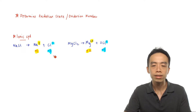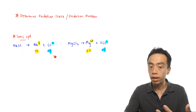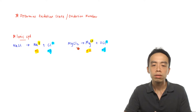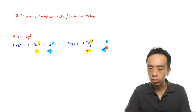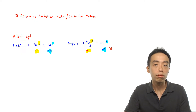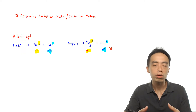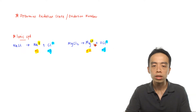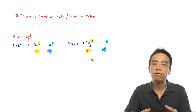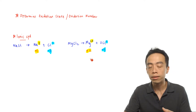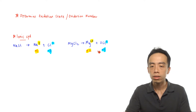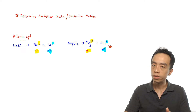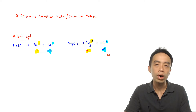Another example: magnesium chloride is made up of Mg²⁺ cations and Cl− ions. The oxidation number follows the charge. Mg has a 2+ charge, so the oxidation state for magnesium is +2. Cl has a −1 charge, so the oxidation state for Cl is −1.